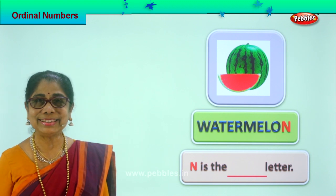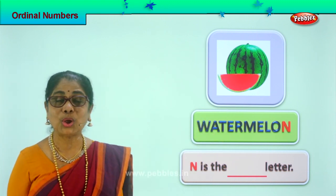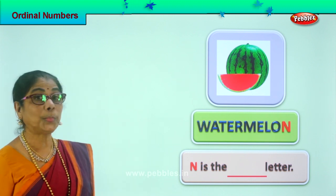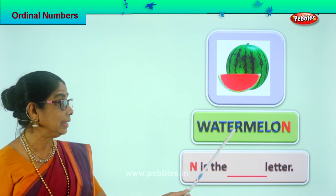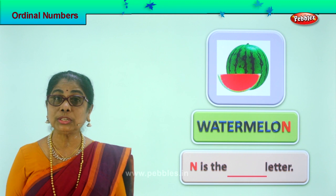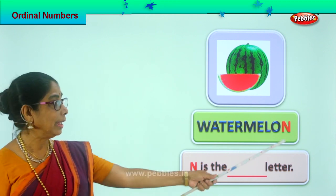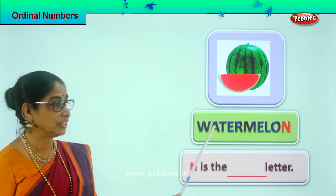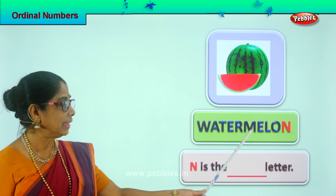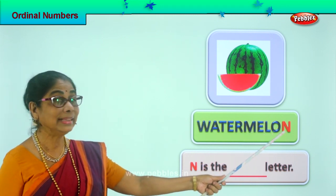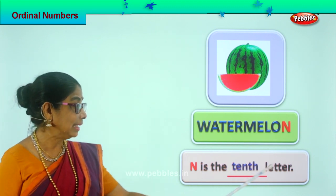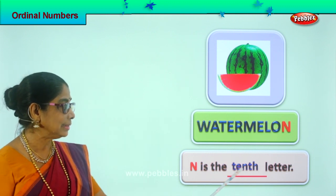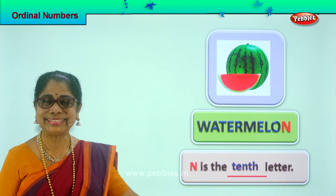Look what you have — what is it? Watermelon! Nice summer fruit. Watermelon: outside is green, inside is lovely dark red. Let's spell watermelon: W-A-T-E-R-M-E-L-O-N. Which is the colored letter? N. Let's count the ordinal position: first, second, third, fourth, fifth, sixth, seventh, eighth, ninth, tenth — N is the tenth letter. Spell tenth: T-E-N-T-H, tenth. N is the tenth letter.